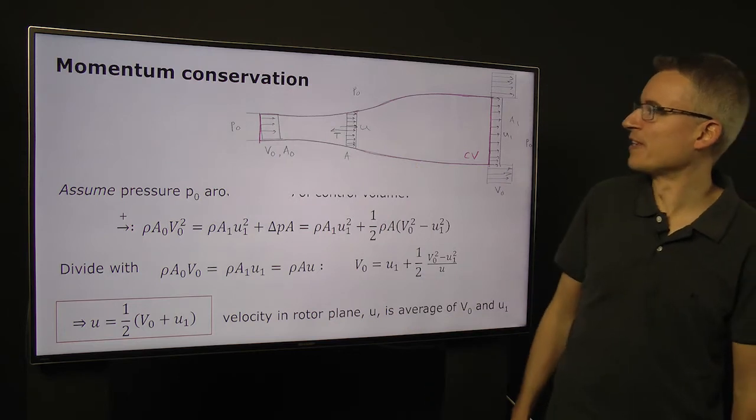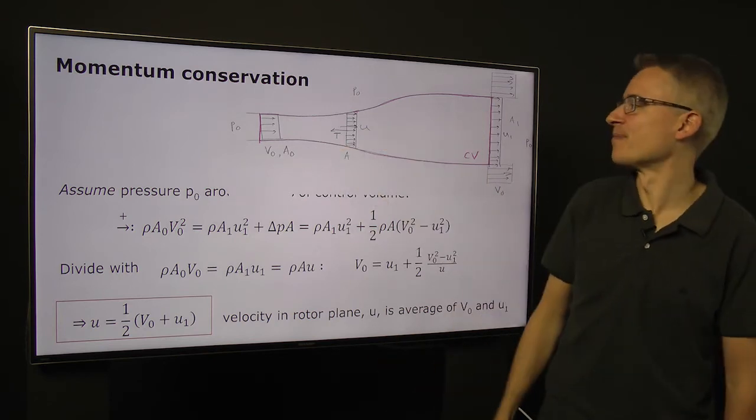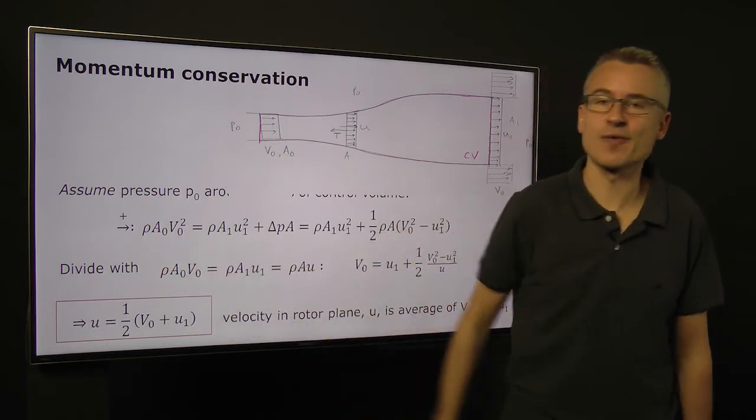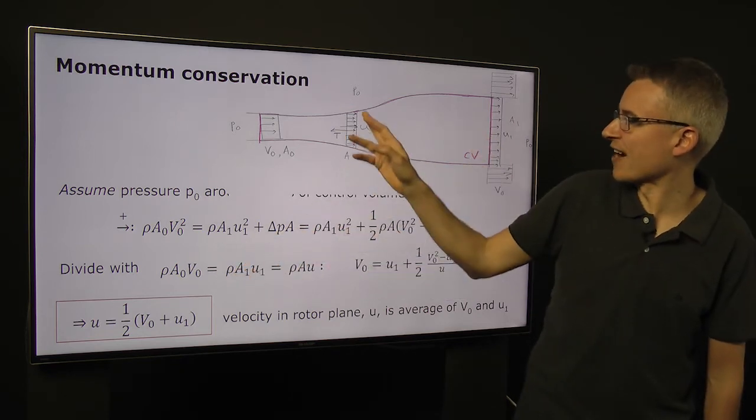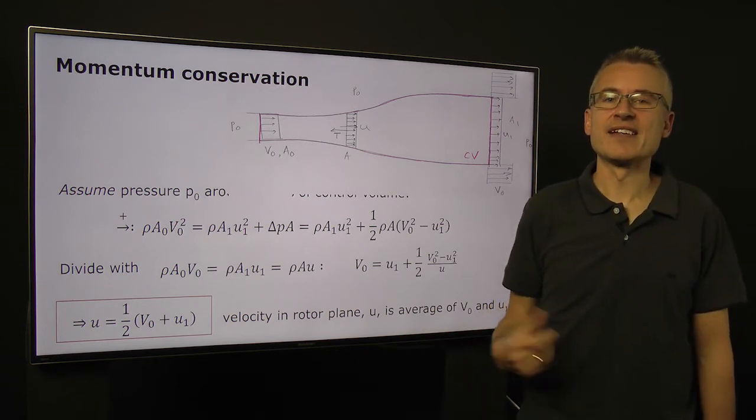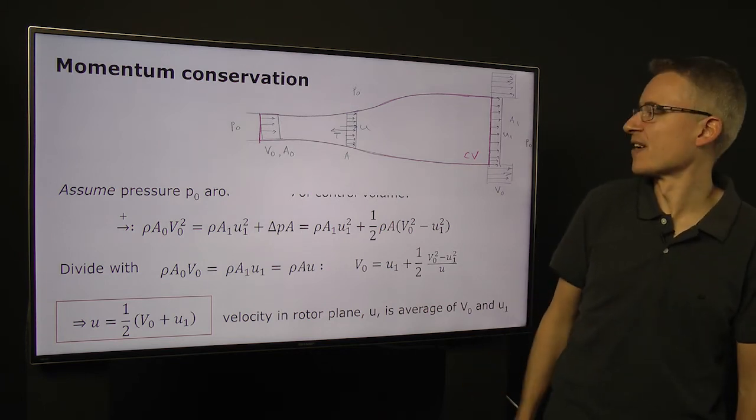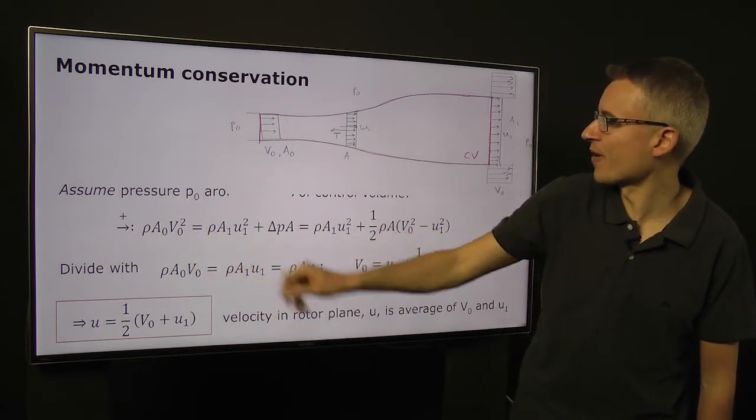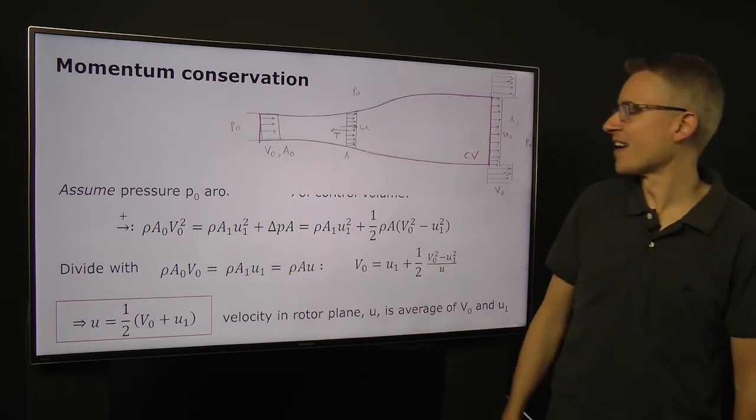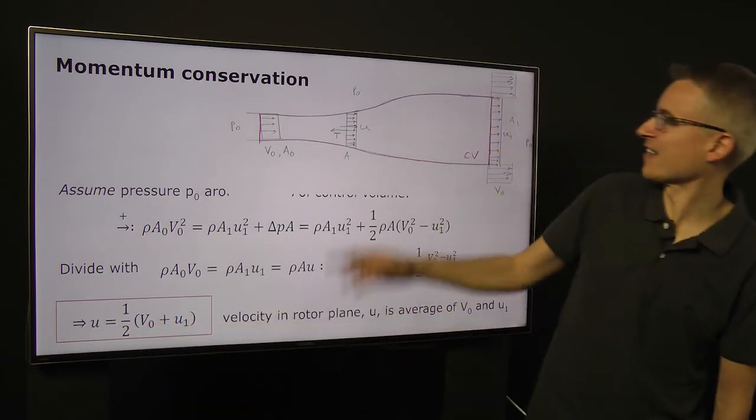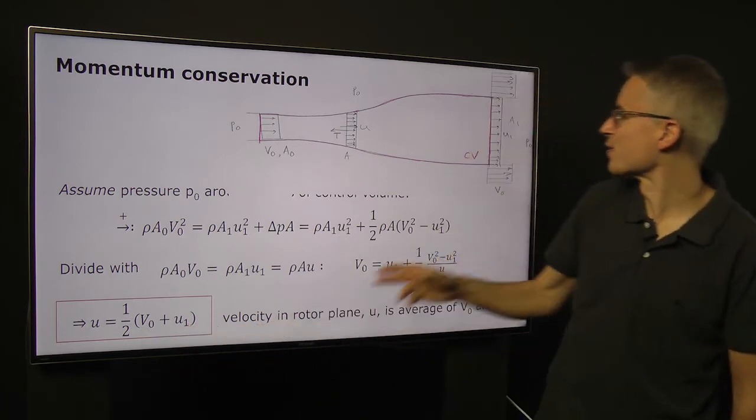Our next step will be to look at the momentum conservation, and we have drawn up a control volume here, which is the red box, and we will look at the balance between inflow of momentum, rho a0 v0 squared, outflow of momentum, rho a1 u1 squared, and forces, the forces are delta p times the area. Now, this delta p, we have an expression for that from the previous slide, and we are also able to utilize mass conservation, because rho a0 v0 equals rho a1 u1, which also equals u times a times rho, and we can divide that out as a common factor. And that leads to this important result, which says that the velocity through the rotor plane is actually the average of the inflow speed and the terminal speed u1.